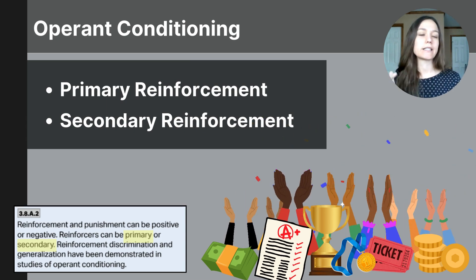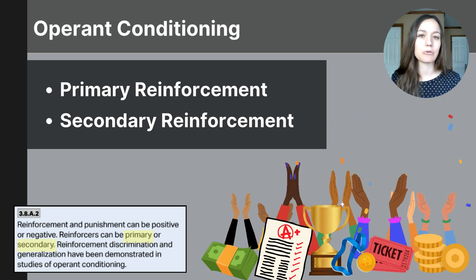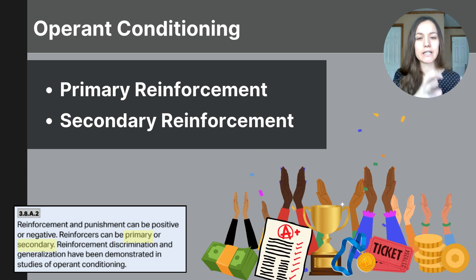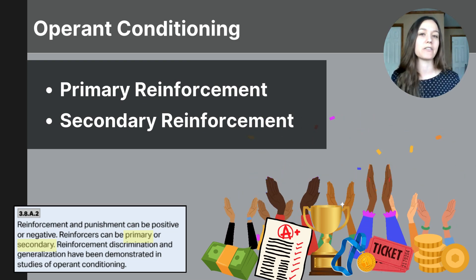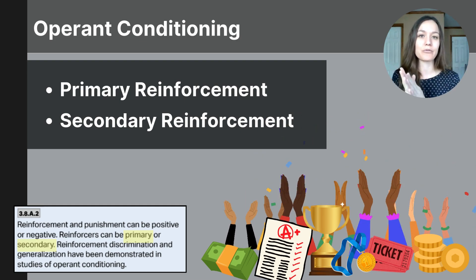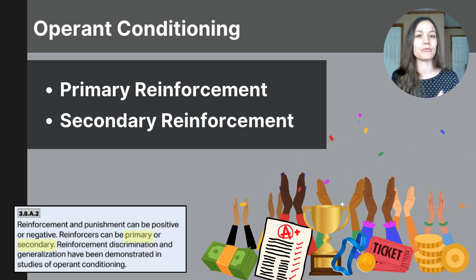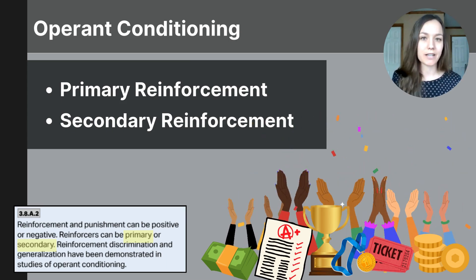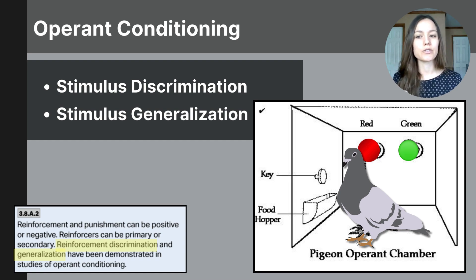You are reinforced by secondary reinforcers all the time — things that don't inherently have biological value but we've assigned them value, like hearing applause after performing in a show or getting an A on a test after performing well. These are examples of secondary reinforcers. In both operant and classical conditioning, we use the terms stimulus discrimination and stimulus generalization to describe how animals respond to different stimuli.